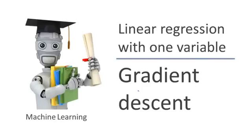We previously defined the cost function j. In this video, I want to tell you about an algorithm called gradient descent for minimizing the cost function j. It turns out gradient descent is a more general algorithm and is used not only in linear regression — it's actually used all over the place in machine learning. And later in the class, we'll use gradient descent to minimize other functions as well, not just the cost function j for linear regression.